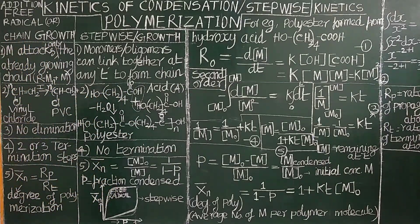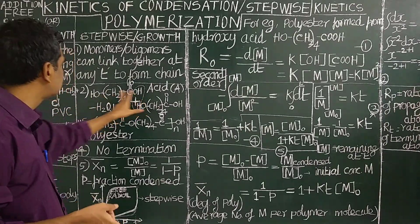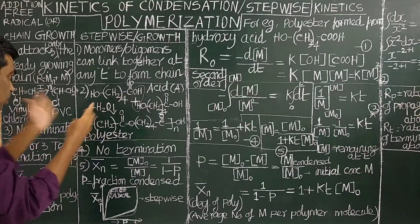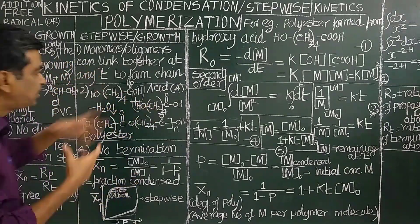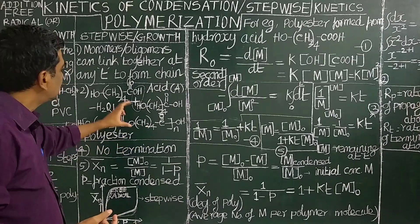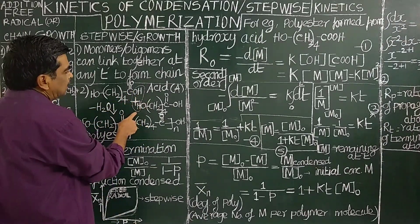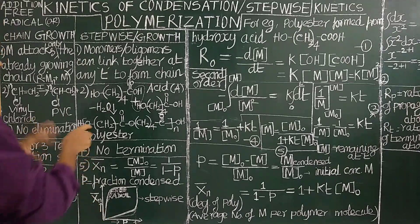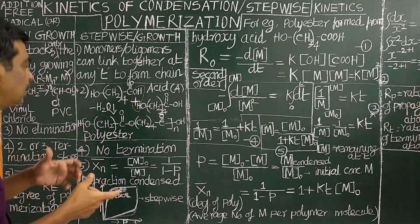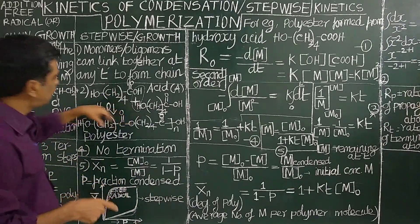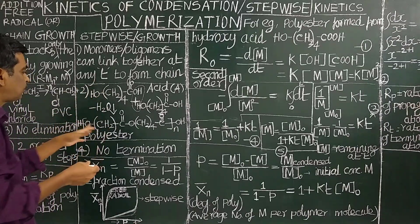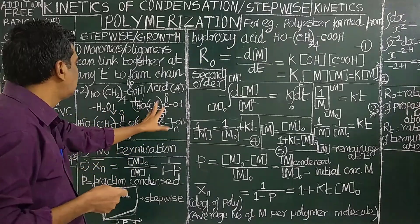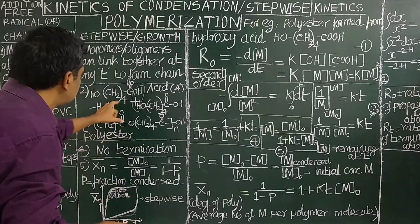Whereas in condensation polymerization, for example, hydroxy-carboxylic acid has two functional groups in the same molecule: an OH group and a carboxylic acid (COOH) group. When several molecules combine together, the carboxylic acid reacts with the hydroxyl group in an esterification reaction. Since N molecules react, there are several ester groups formed, so the polymer is called polyester.